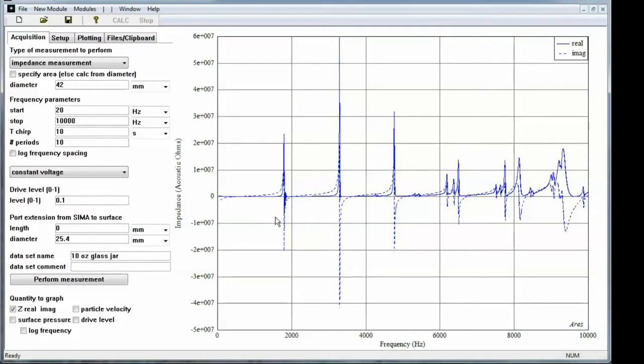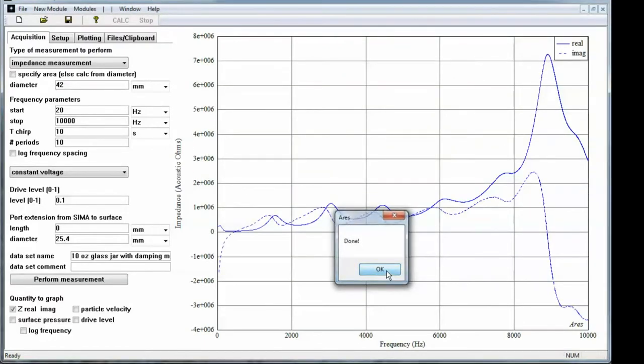And let's go back to ARIES. Now I'm going to change the data set name, and I'm going to add 'with damping material' onto the data set name and repeat the measurement. It's taking a couple sweeps to get the measurement. And now we see the impedance into the jar with the damping material present. We still see the effect of cavity modes, but they're much more damped than previously seen.